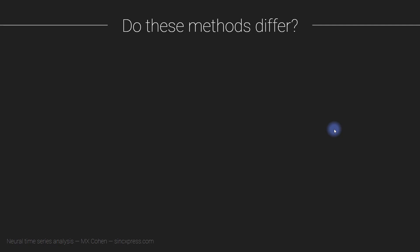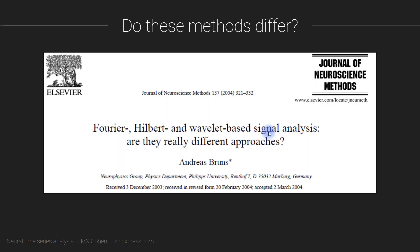Do these three methods actually differ? The answer is no, they don't. In earlier iterations of this course, I would give students an exercise where they would take some data — either real or simulated — and produce a time-frequency power plot from Morley wavelet convolution, filter-Hilbert, and short-time Fourier transform. They discovered that given appropriate parameter selections, the results are nearly the same. You get almost exactly the same results from these three different time-frequency analysis methods. I actually stopped giving this exercise mainly because it turned out not to be so interesting and it takes quite a while to write all the code for these three methods.